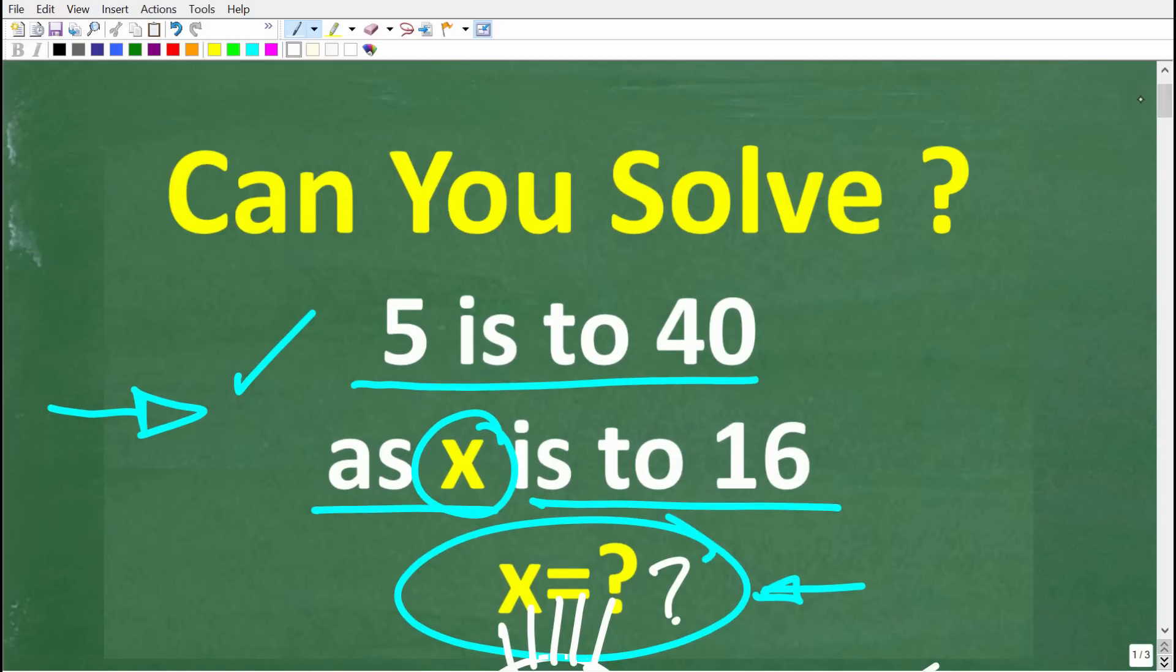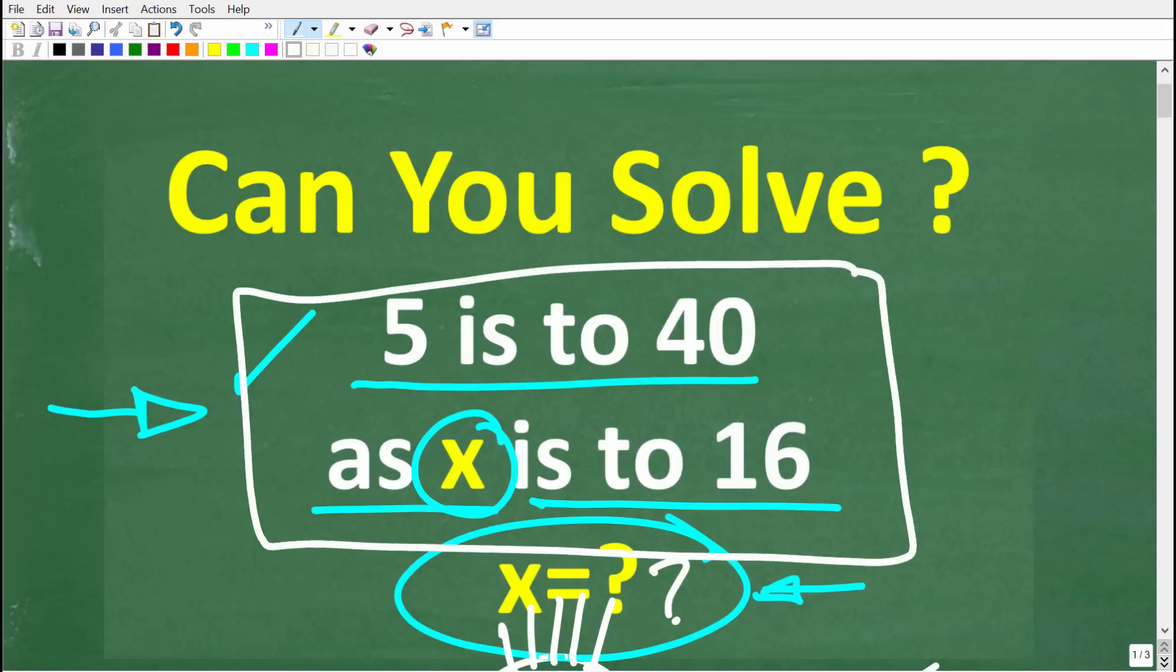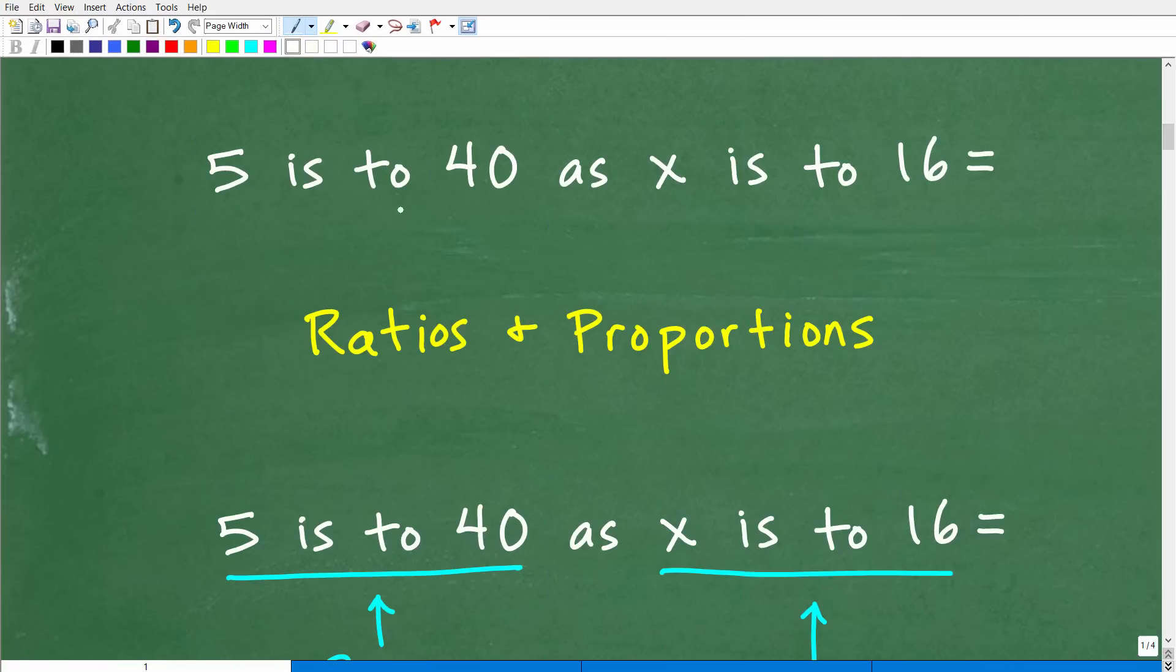But what I want to teach you here is how to use ratios and proportions to solve a problem like this, right? These types of problems are very common in math and especially in algebra. Okay, so let's go ahead and get into this right now. All right, so 5 is to 40 as x is to 16. What this is is a problem, a math problem, that falls under the topic of ratios and proportions.